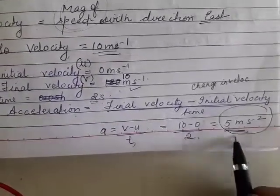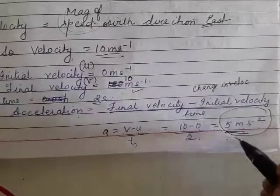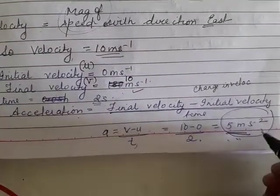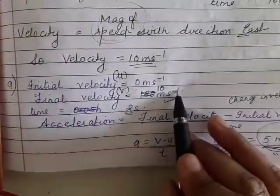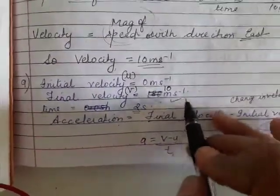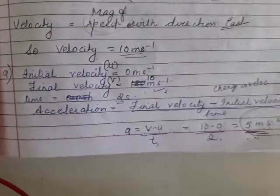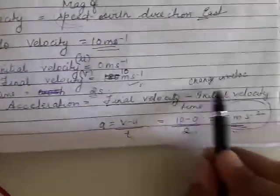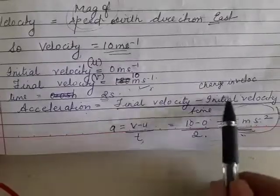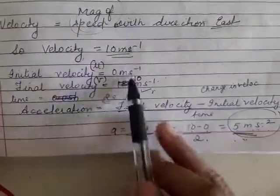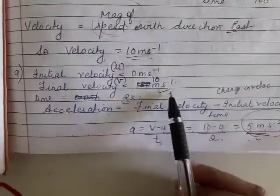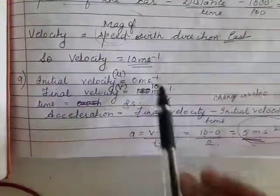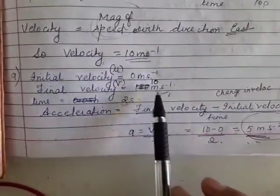Giving proper units to the answer is very very important. The unit of acceleration is m/s² (meter per second squared, or m·s⁻²), and velocity is m·s⁻¹. There are equal marks for the unit, so don't forget to give units. Acceleration = change in velocity / time = (final − initial). Here initial was 0 because the car was at rest, then it acquired 10 m/s.